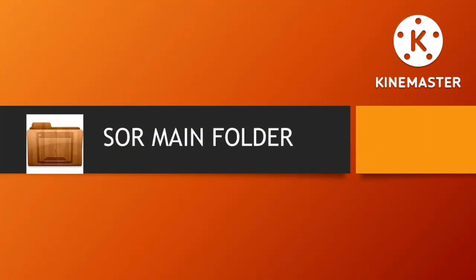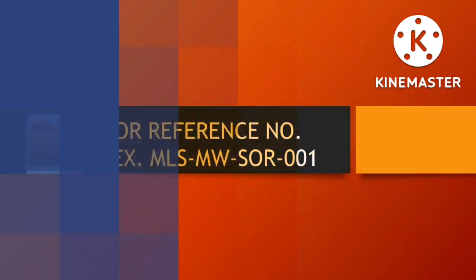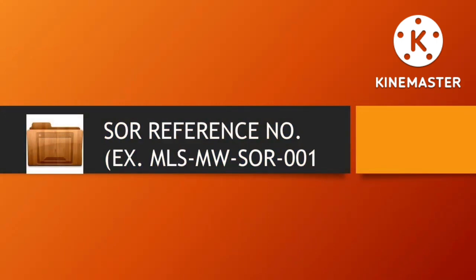Now, how to do the structure of site observation report on your system. When you go on your system, you have a main folder called site observation report, or SOR. When you click this main SOR folder, you will create a subfolder and put the SOR reference number — for example, SOR number 1, 2, 3, and 4. I don't know if other companies separate SOR for civil, electrical, architectural, or mechanical, but based on my experience, all SORs we issued use general continuous numbers issued from time to time whenever our inspector or engineer sees violations on site.